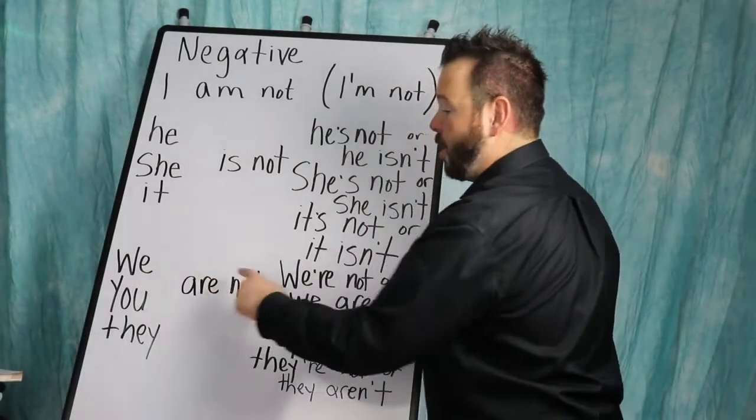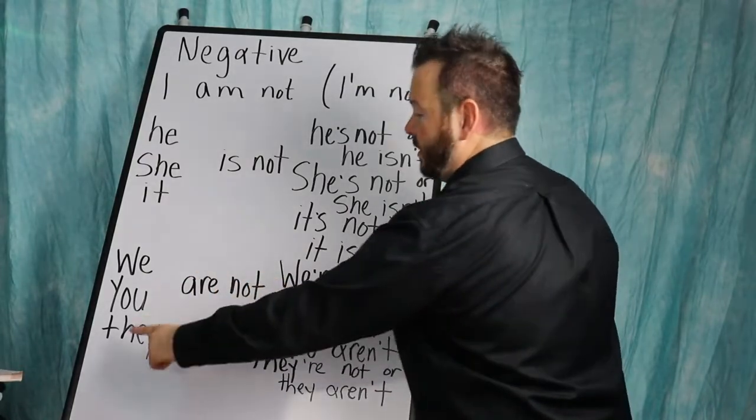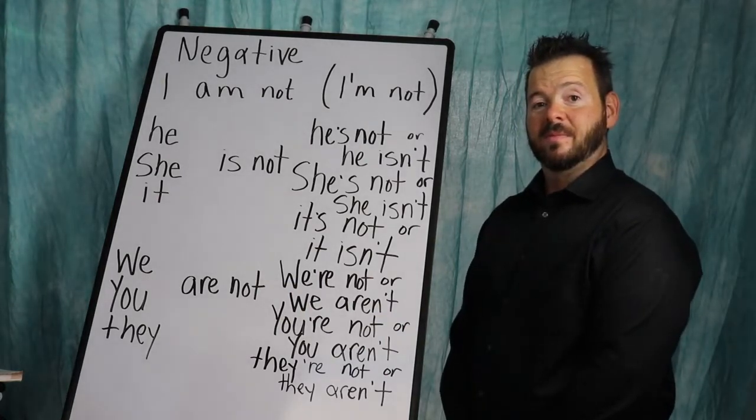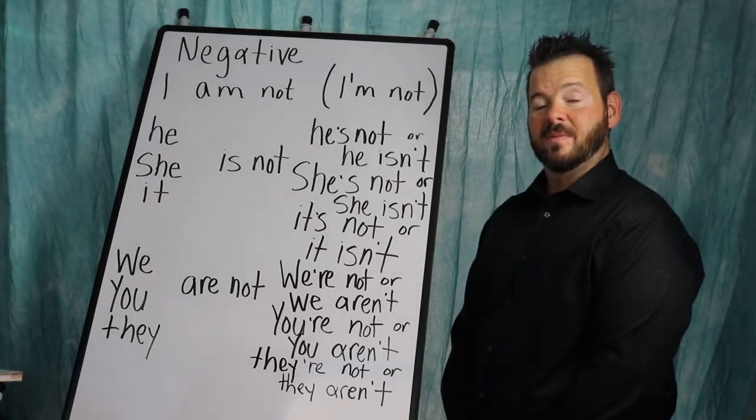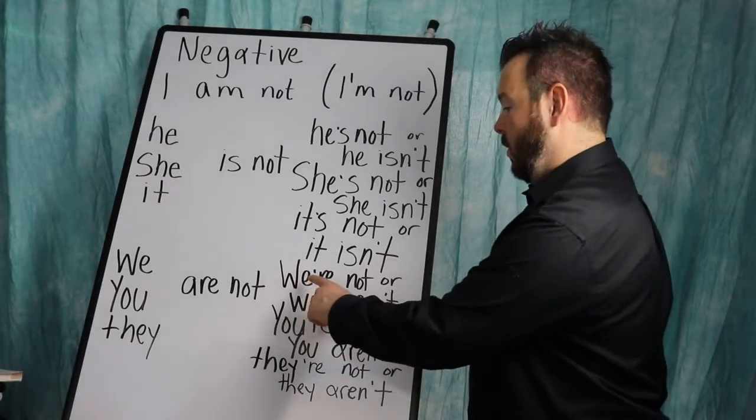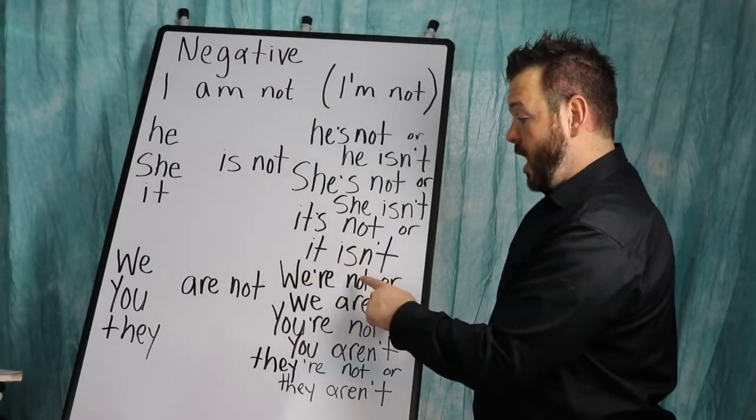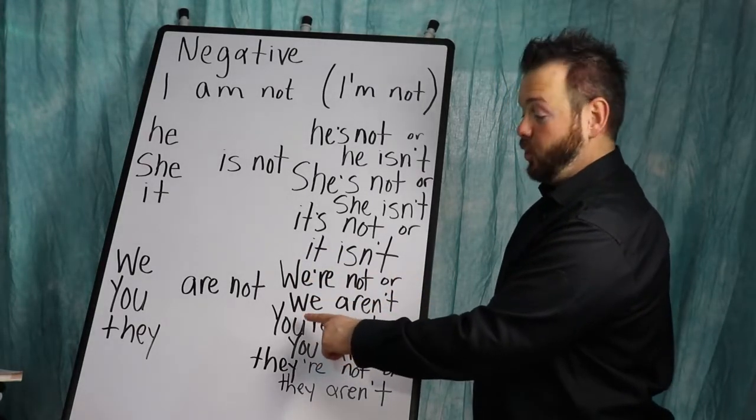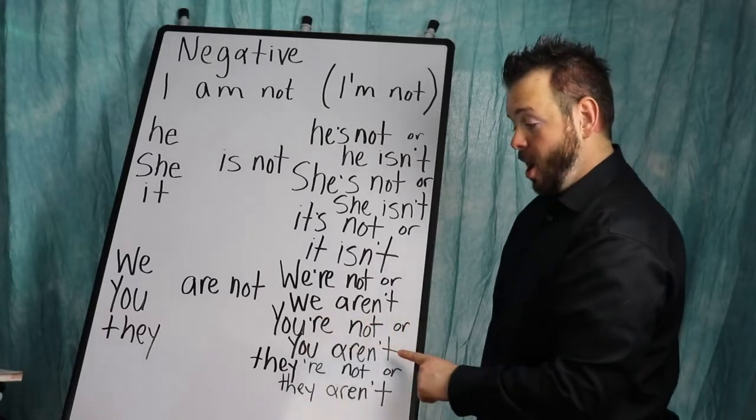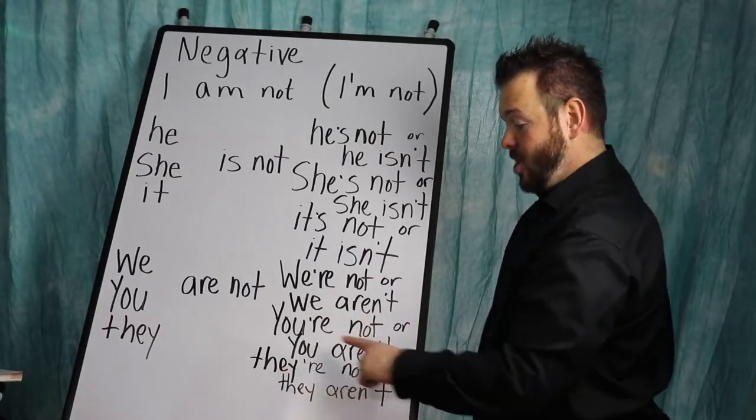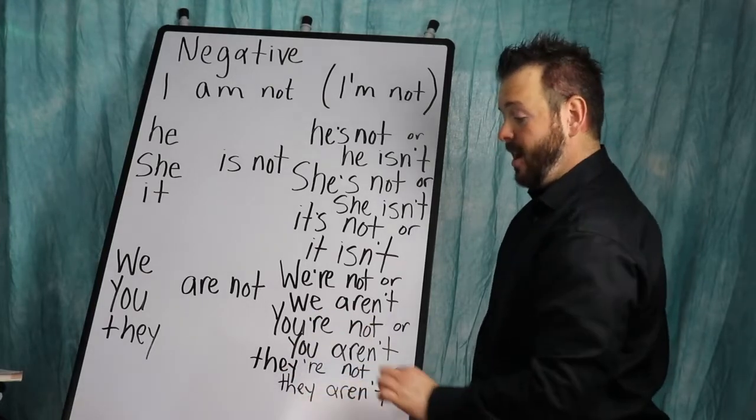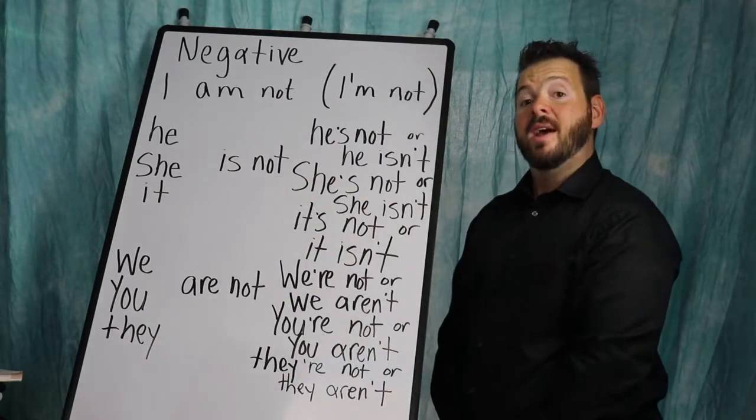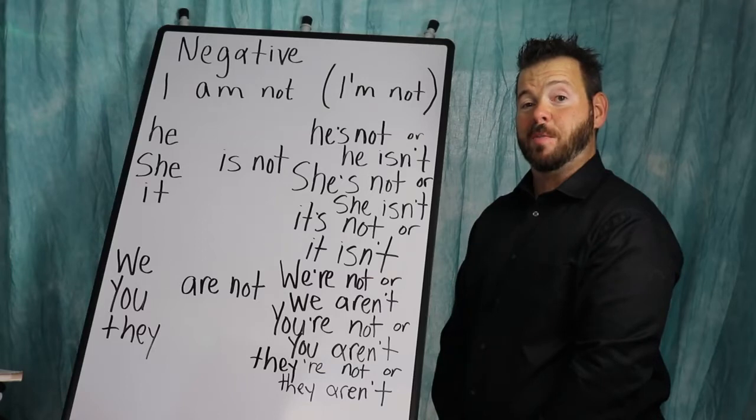So, we are not, you are not, they are not. Okay, repeat it. Good. You can put for the negative, we're not or we aren't. You're not or you aren't. They're not or they aren't. Okay? Press pause right now so you can copy this chart down and it'll help you with the examples that I'm going to provide in a few minutes.